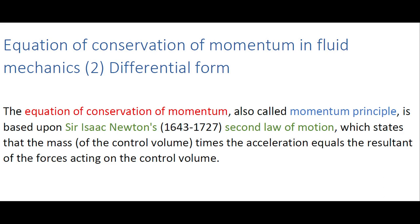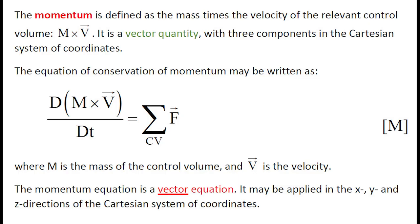The equation of conservation of momentum, also called the Momentum Principle, is based upon Sir Isaac Newton's second law of motion, stating that the mass times the acceleration of the control volume equals the resultant of the force acting on the control volume. The momentum is defined as the mass times the velocity of the relevant control volume, m times v. It is a vector quantity with three components in the Cartesian system of coordinates. The equation of conservation of momentum may be written in vector form, with m the mass of the control volume and v the velocity vector.